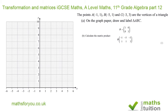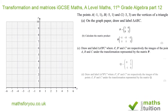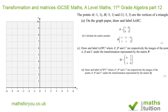Part b says calculate the matrix product where P equals [1,0; 0,3] multiplied by the vertices matrix of the triangle, which is (-1,1), (-5,1), (-3,3). Then it says draw triangle A'B'C' where A', B', C' are respectively the images of points A, B, and C under the transformation represented by matrix P.